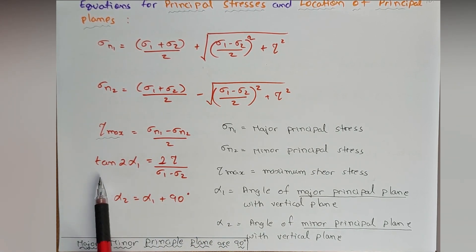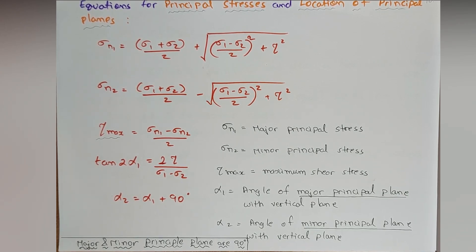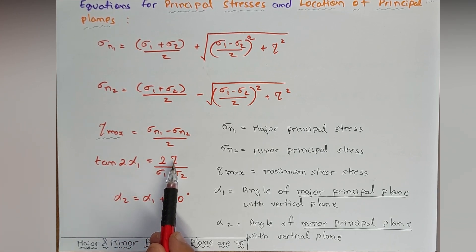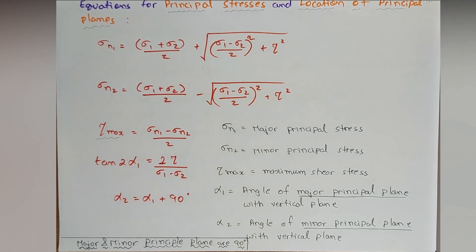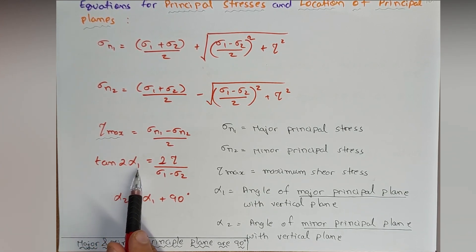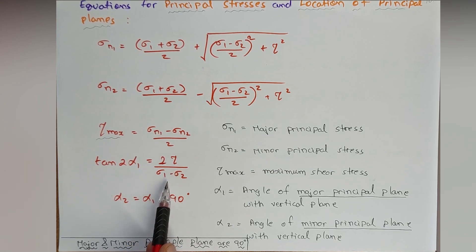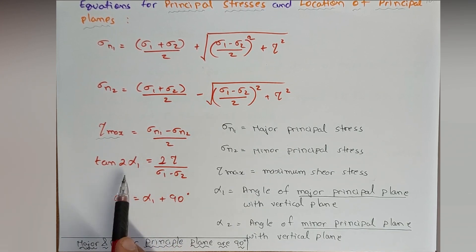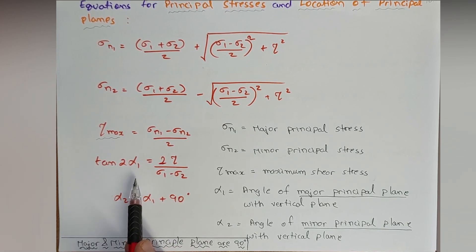Regarding the location of principal planes, we need to calculate the angle at which the principal plane is located. For that we have the formula: tan 2α = 2τ / (σ1 − σ2). We don't need to concern ourselves with the derivation; we just remember this formula. So tan 2α1 = 2τ / (σ1 − σ2), and we can make α1 the subject and calculate the value when σ1, σ2, and τ are known.